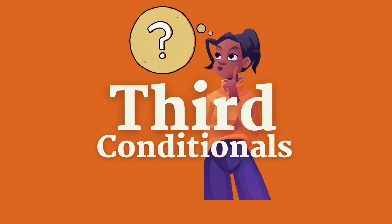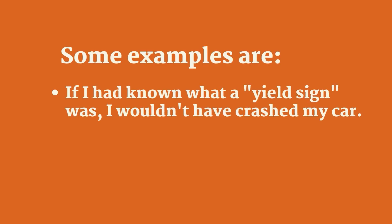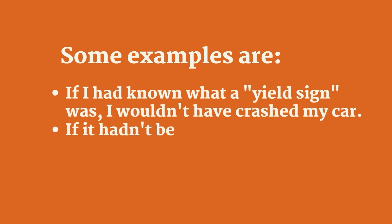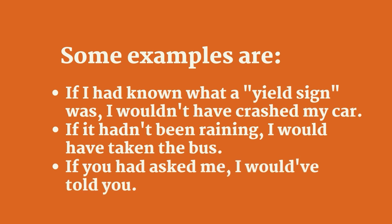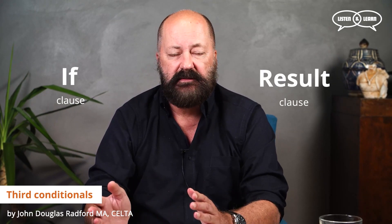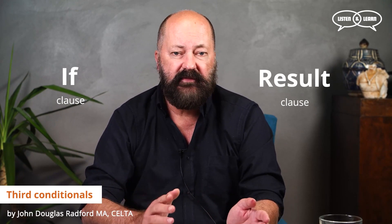So let's talk about the third conditional. The third conditional is the only conditional type where we talk about the past — not what happened in the past, but what would have happened in the past if other conditions had occurred. If I had known what a yield sign was, I wouldn't have crashed my car. If it had been raining, I would have taken the bus. If you had asked me, I would have told you. In the third conditional, the if clause — "if I had known," "if it had been raining," "if you had told me" — those are in the past perfect.